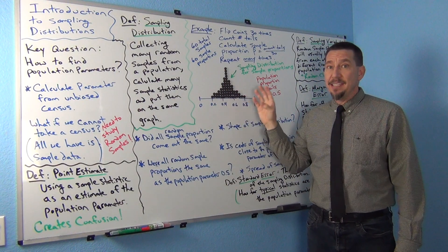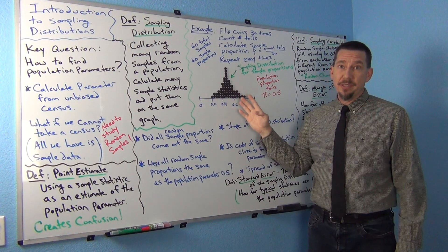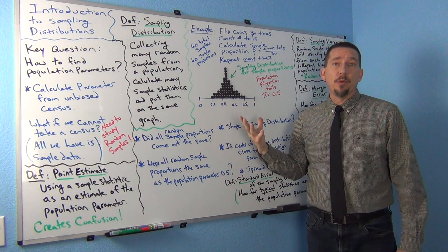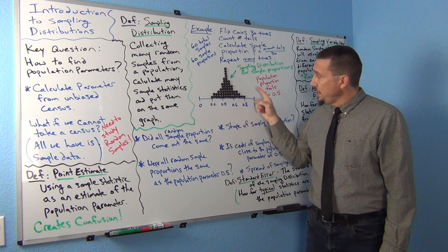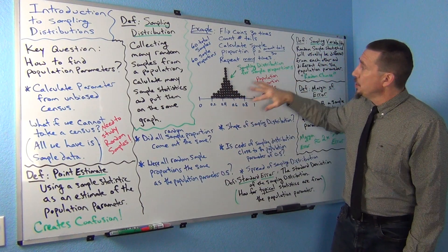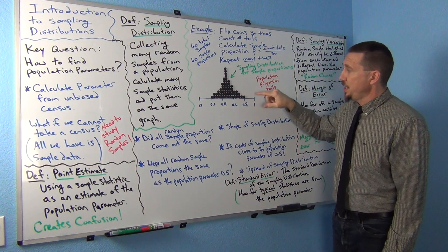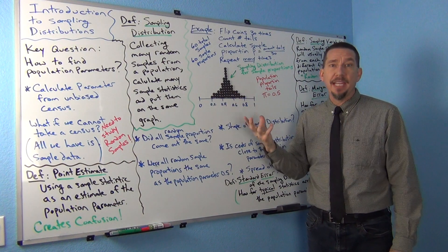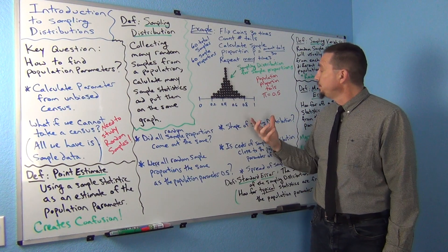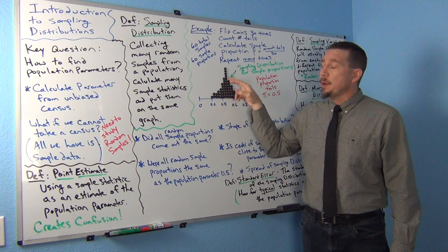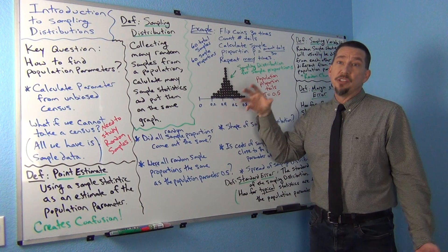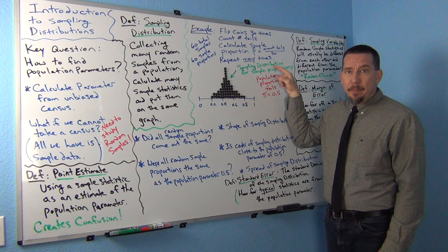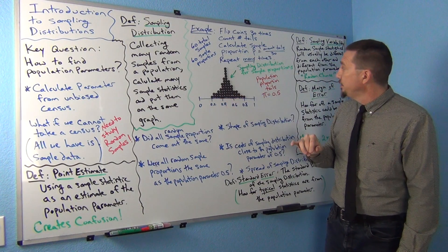So this is not a graph of one data set — this is a graph of 60 random samples. Each one of these dots represents a proportion. You can kind of see what the proportions were. This would be referred to as a sampling distribution for sample proportions because each dot represents a proportion, a p-hat. Think of it as 60 different p-hats, 60 different random samples. By the way, if each dot represented a mean of a sample, this would be a sampling distribution for sample means. Whenever you hear that term 'sampling distribution,' think lots and lots of random samples all on the same graph.